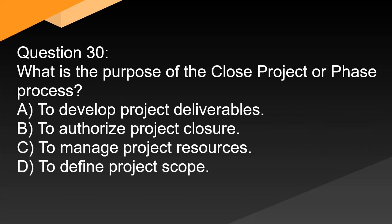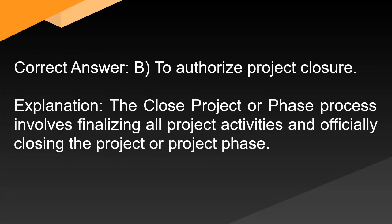Question 30: What is the purpose of the close project or phase process? A. To develop project deliverables. B. To authorize project closure. C. To manage project resources. D. To define project scope. Correct answer: B. To authorize project closure. Explanation: The close project or phase process involves finalizing all project activities and officially closing the project or project phase.